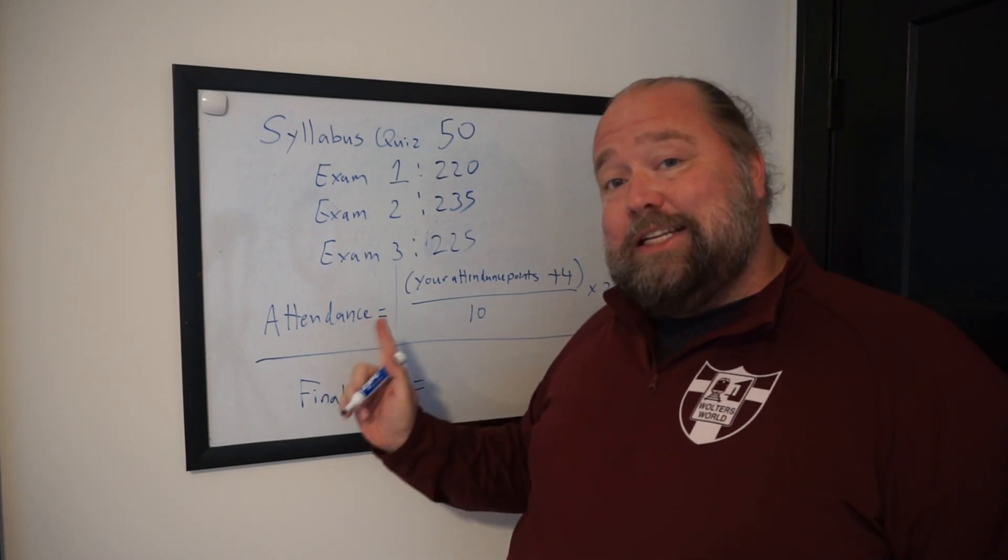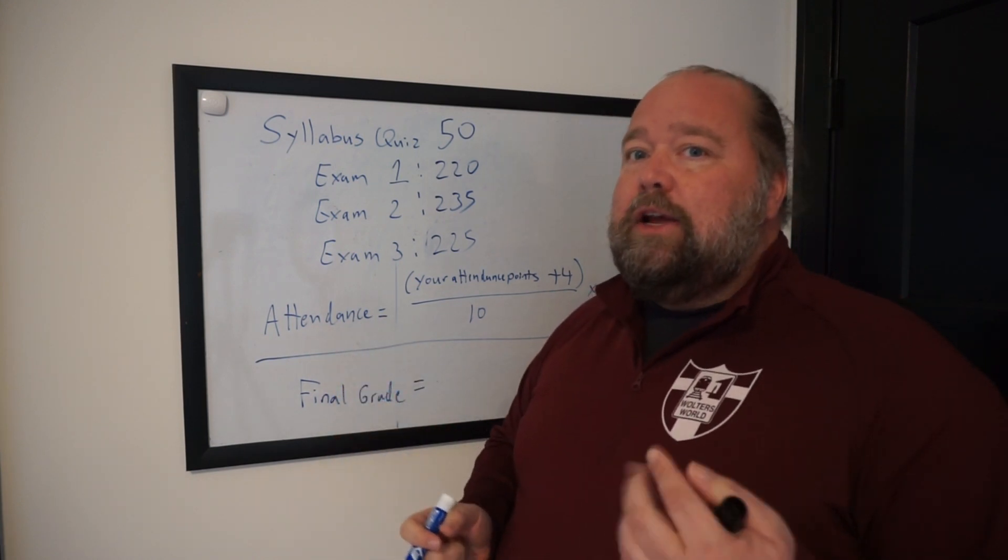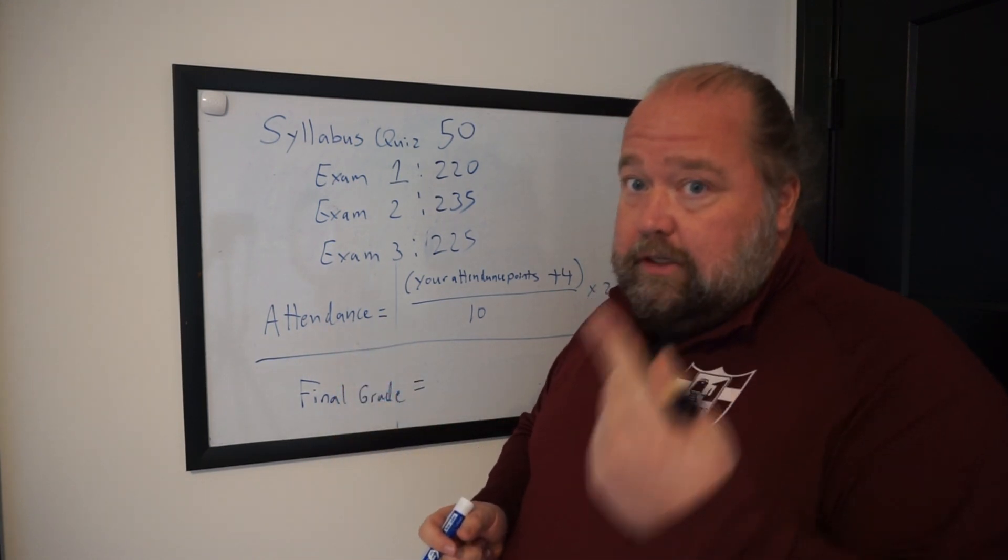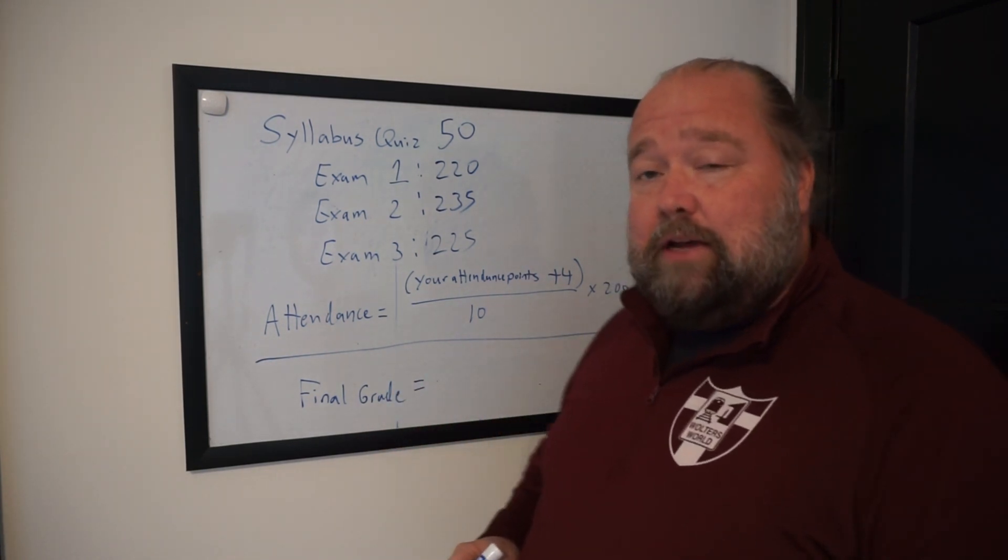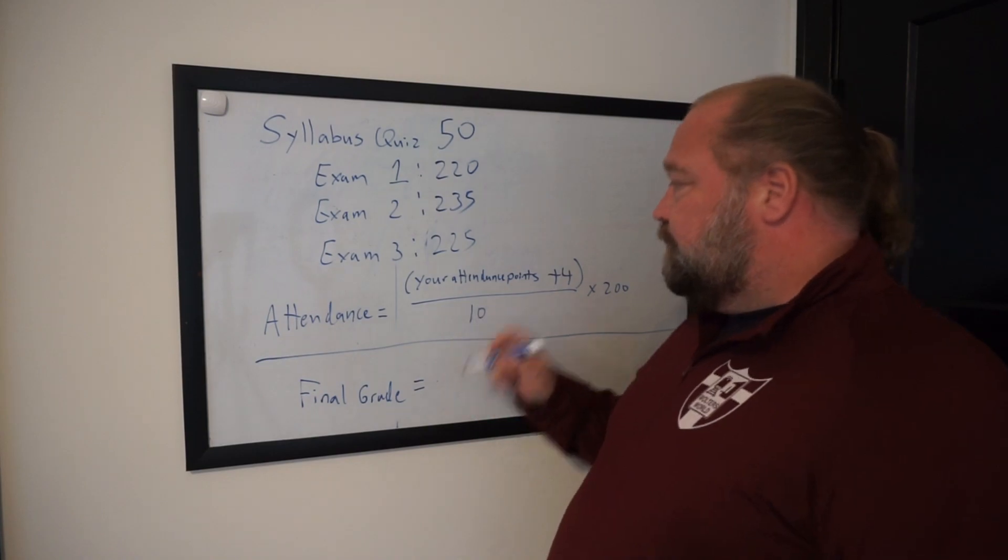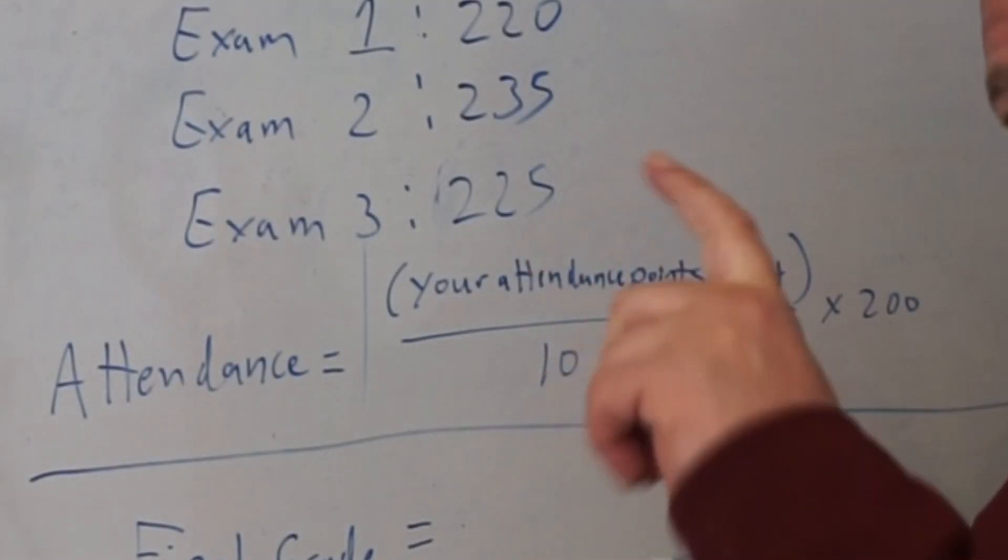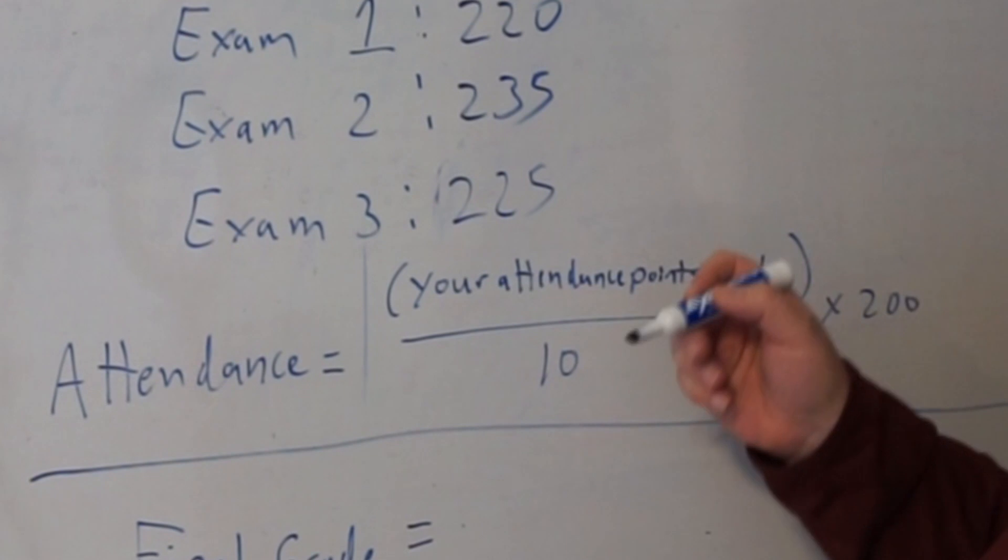But the issue is your attendance points. Now remember, I only gave a point if you were there. You got a 1 or you got a 0. But that doesn't equal our 200 points that you can max out on. So what you're going to do is take your attendance points that you earn, so you count up those 1s on there. For the attendance checks, let's say you went to 6.